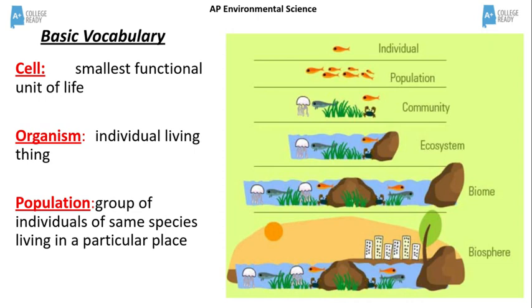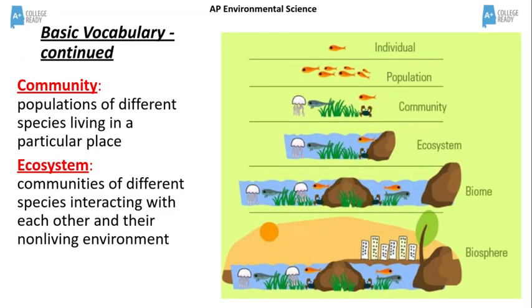A population is a group of individuals of the same species living in a particular place. A group of goldfish living in the same pond is an example of a population. A community is several populations of different species living in a particular place. In the diagram, you can see several different species living together in the community.